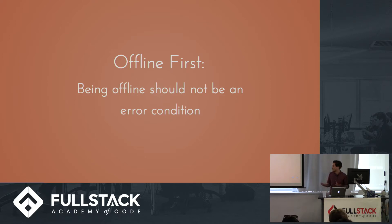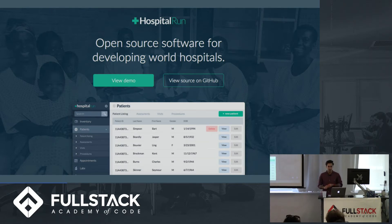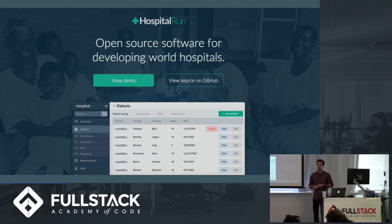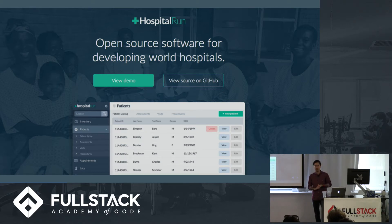The first advantage is quite obvious: you can actually build apps that can be used without internet access. A great example is HospitalRun — it's open source software for developing-world hospitals. The idea is that you can take it into rural areas where you might not have any internet access at all, collect healthcare data, and then when you get back to a medical facility with internet access, it will sync up with all the other clients who can also use that data.